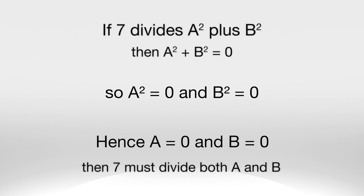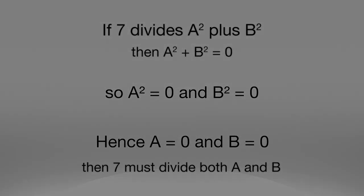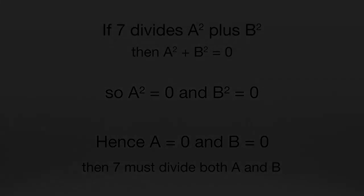So we end with the final line, therefore 7 must divide both A and B. So we've proved what we want to prove. If 7 divides A squared plus B squared, then 7 divides both A and B. I hope you've enjoyed seeing that lazy mathematics can be good mathematics.